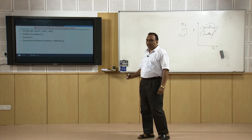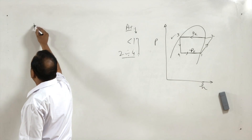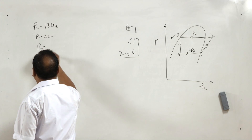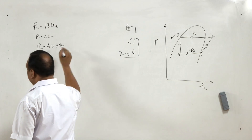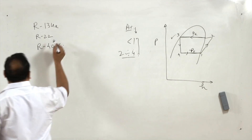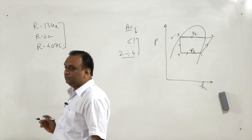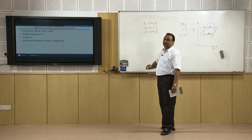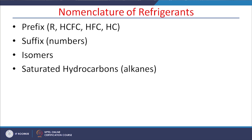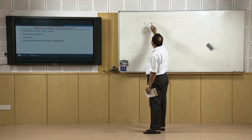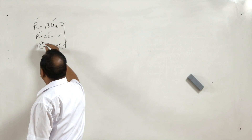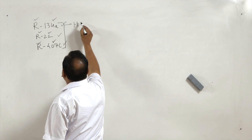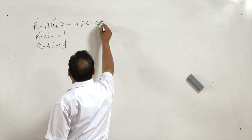You must have observed in previous lectures that I used numbers like R134A, R22, or R407C — alphanumeric expressions — to write the refrigerants rather than their chemical names. In the nomenclature of a refrigerant there are two parts: prefix and suffix. R134A, R22, R407C — in some books these are written as HFC134A or CHFC22.